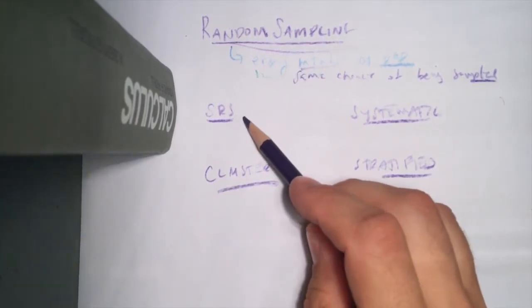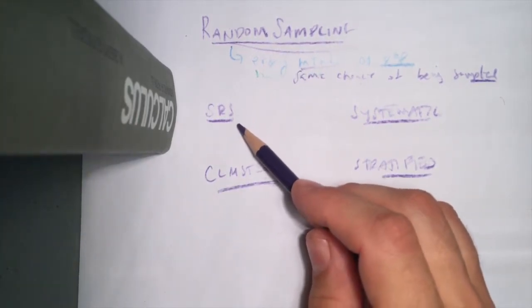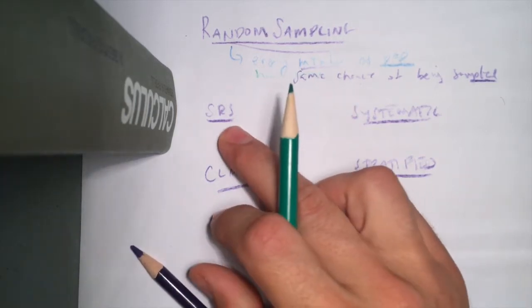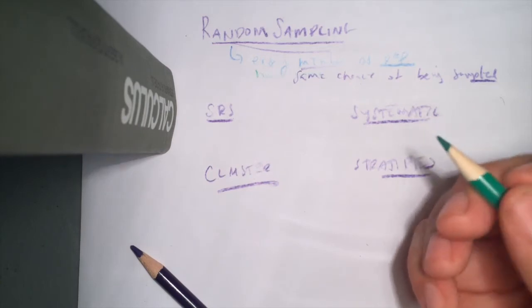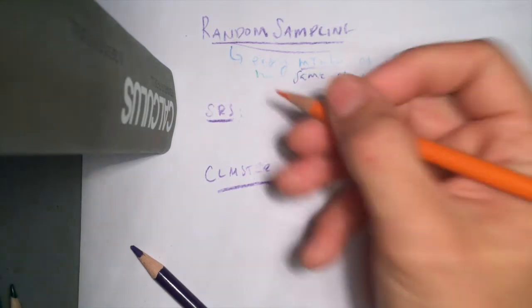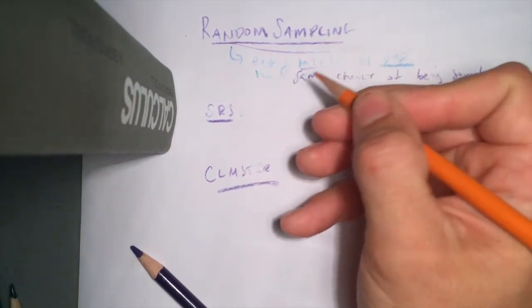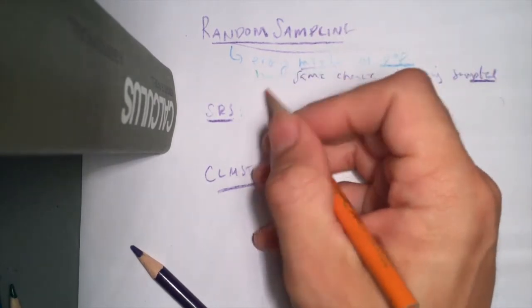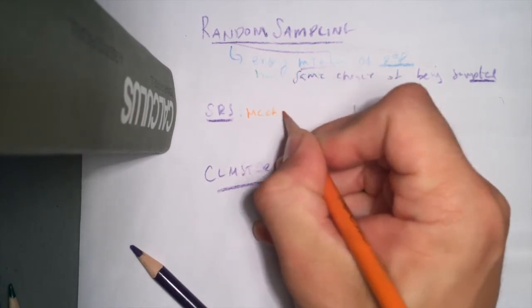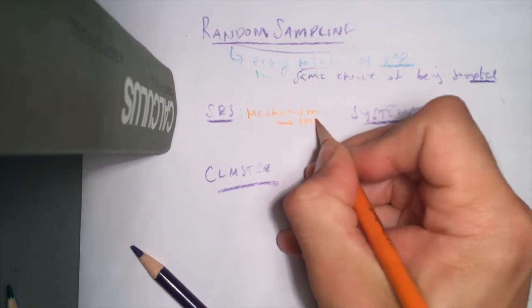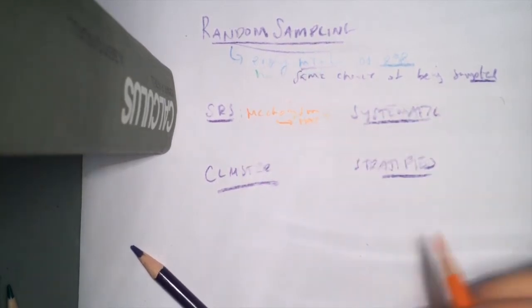The idea of a simple random sample — we said that the mechanism of a simple random sample is different from the actual definition. The mechanism is something you'd normally think of when you take samples: pulling names out of a hat, or giving people numbers and randomly picking numbers. That mechanism — I'll summarize it as the 'hat' idea — is not really the definition of a simple random sample.